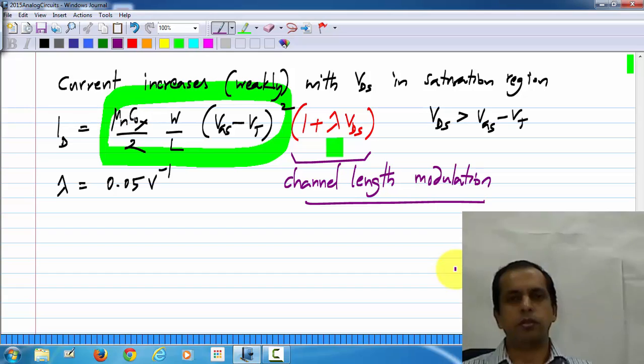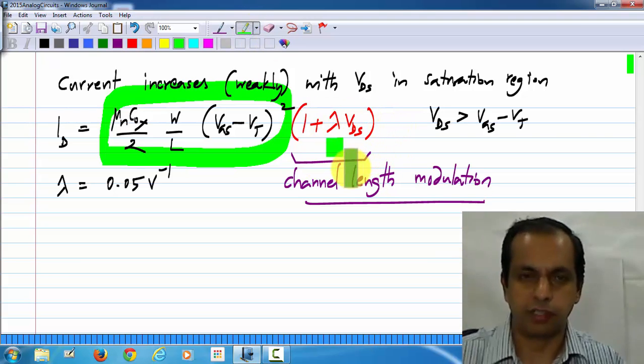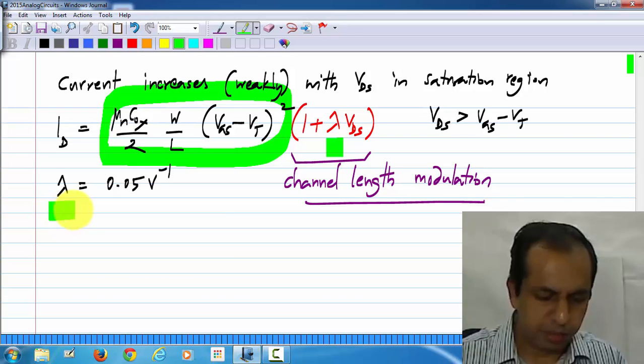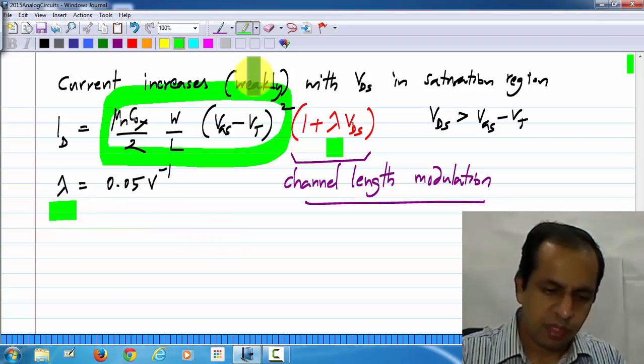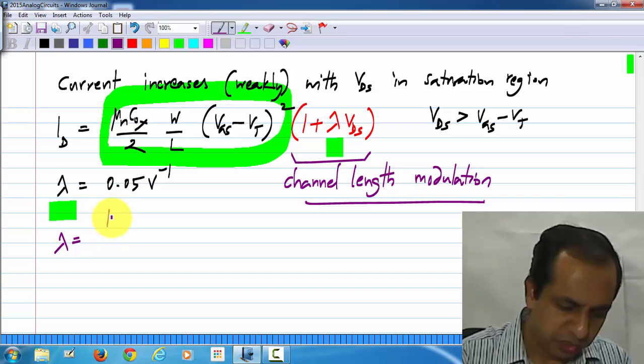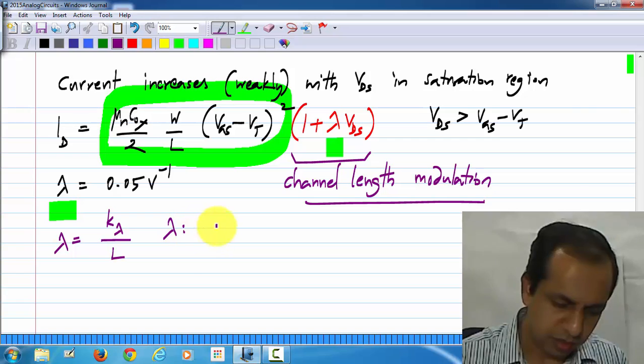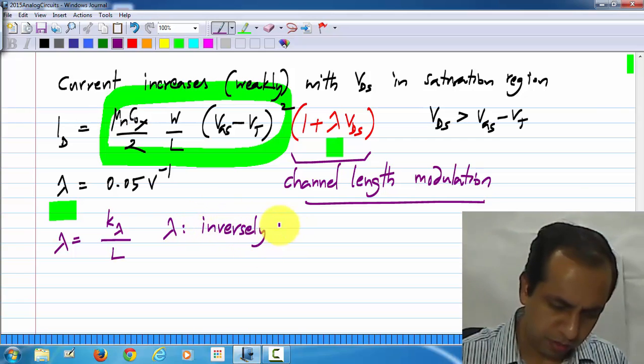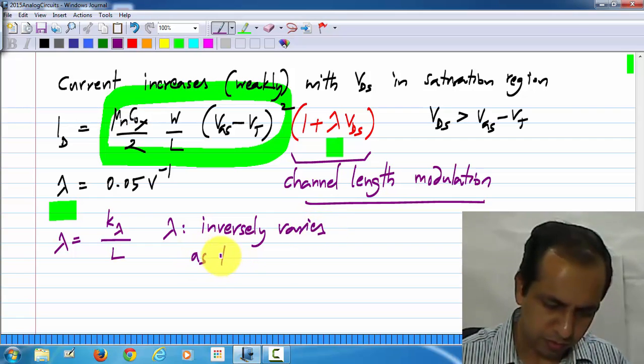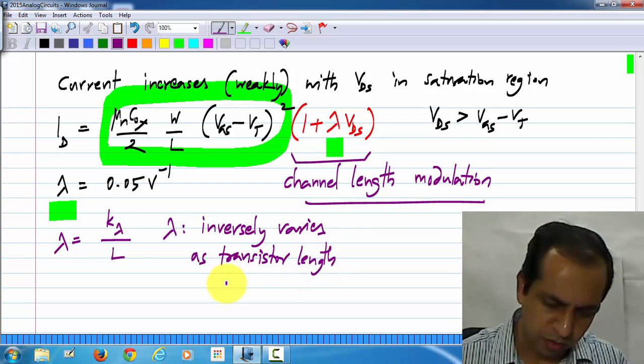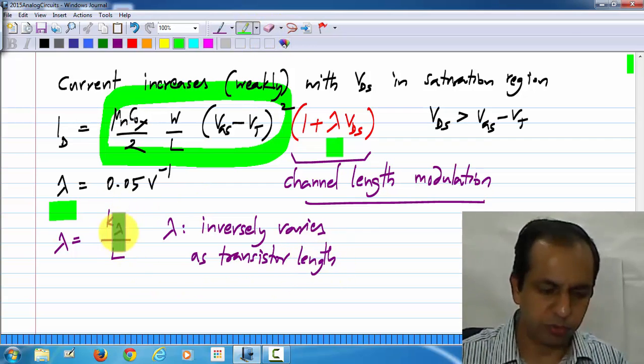So, the phenomenon by which this additional factor appears is known as channel length modulation. Now, if you do not look at the device physics, this term would not make any sense at all, but that is okay. All we need to know is, in saturation region, we have this additional factor, and lambda is a parameter that is given to you, and it turns out that lambda itself depends on the length of the transistor.